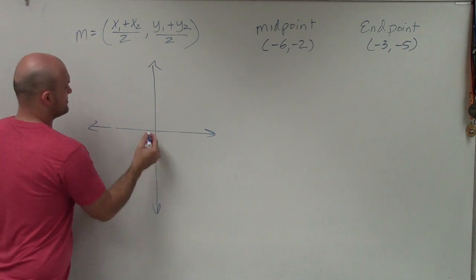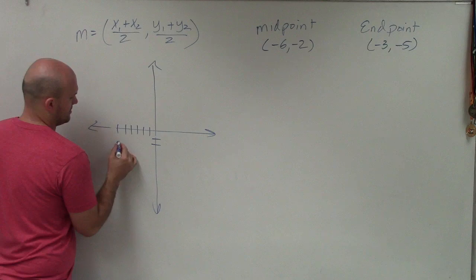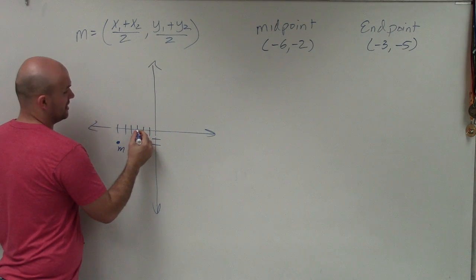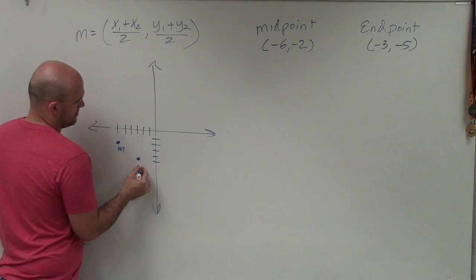So I have (-6, -2). That's my midpoint. And my endpoint is at (-3, -5).